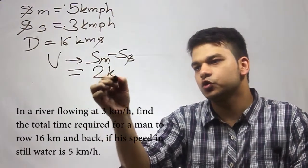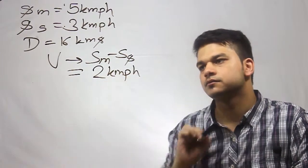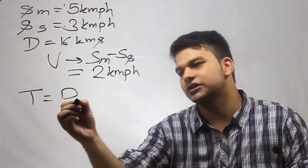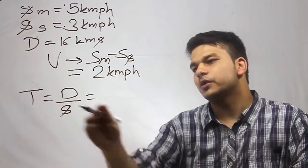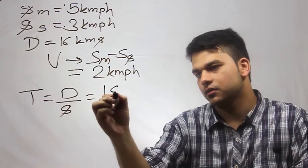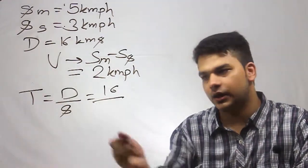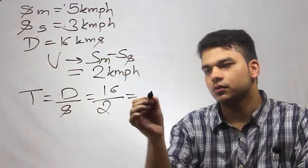Now the time required, we know, is total distance upon total speed. This will be 16 kilometers and the speed upstream is 2 kilometers per hour, so 16 by 2. The time required in the first case is 8 hours.